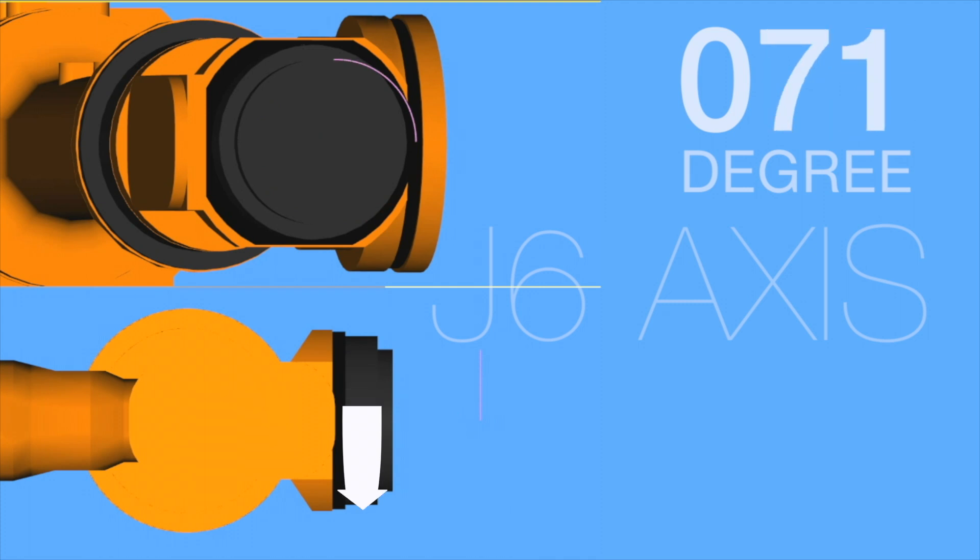Axis 6: This is the wrist of the robot arm. It is responsible for a twisting motion, allowing it to rotate freely in a circular motion, both to position end effectors and to manipulate parts.